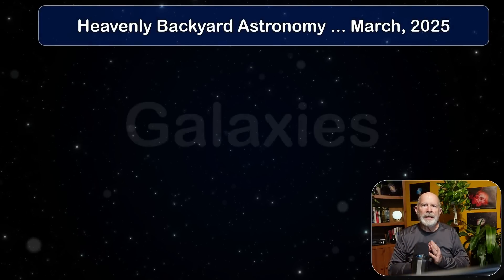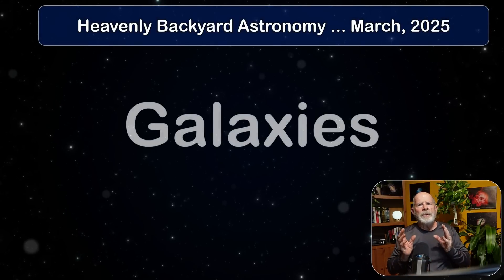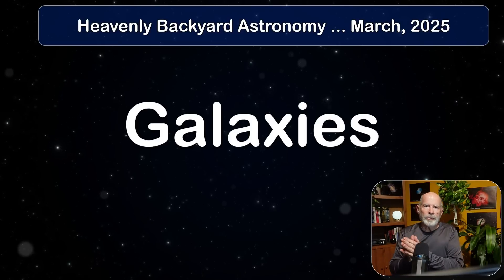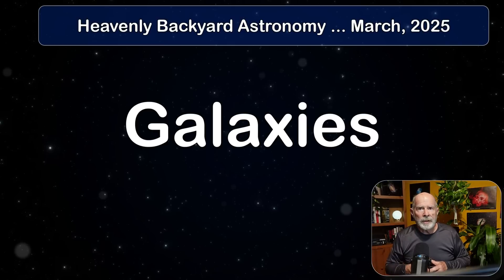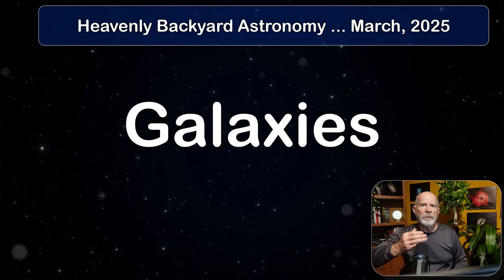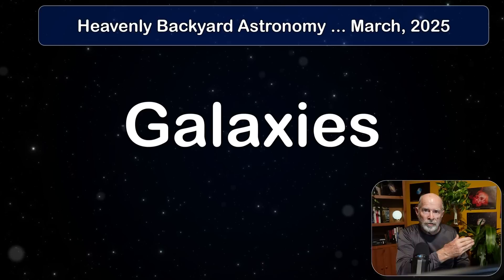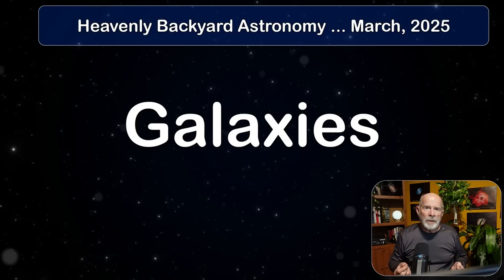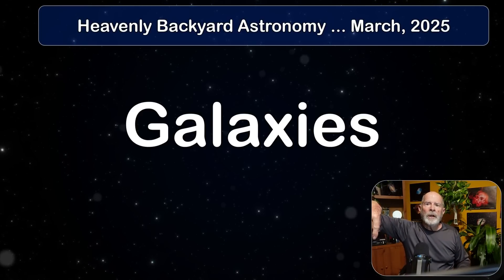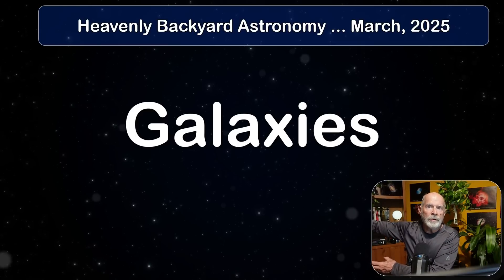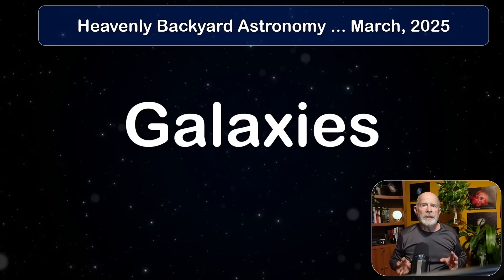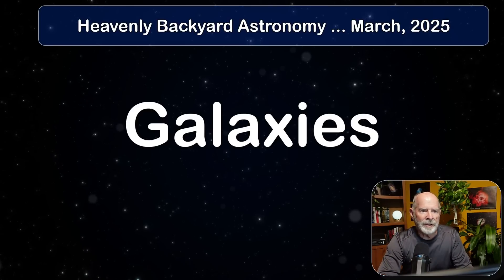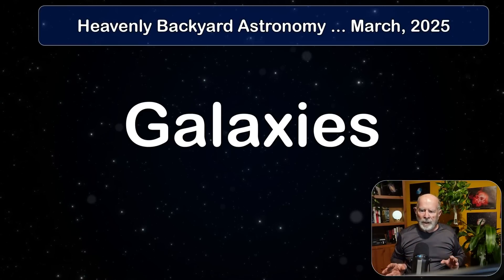March is also the beginning of galaxy season. As the Earth revolves around the Sun, it looks at different angles within the galaxy. During the summer months, the nighttime view looks into the core of the galaxy, so we see lots of nebulosity and stars. During the spring months, Earth is on the other side, looking out from the galactic center into the depths of space — and that's where we see vast numbers of galaxies.